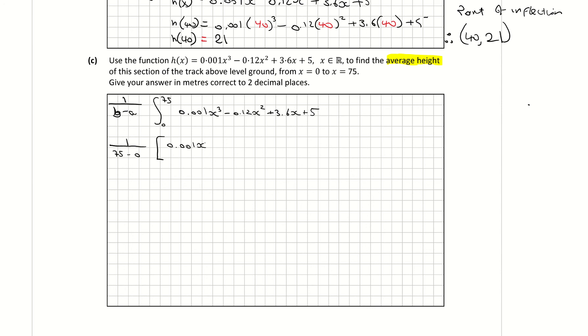So first thing I need to do now is integrate that h of x. And my a and my b, my b is 75 and my a is 0. So it's 1 over 75 minus 0. And I'm multiplying that then by my integral. Now when I integrate it, I increase my power and divide by my new power. So 0.001 x to the power of 4 all over 4 minus 0.12 x to the power of 3 divided by 3, plus 3.6 x to the power of 2 divided by 2, plus 5 x divided by 1. Now you don't need to put in your constant here because in a second we are going to be subtracting when I sub in 0 from the 75. So you're just going to have c minus c, which will cancel.